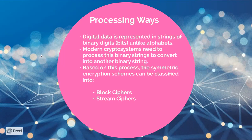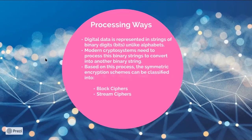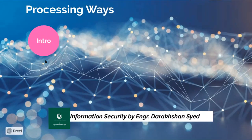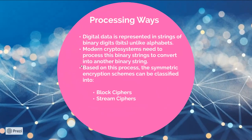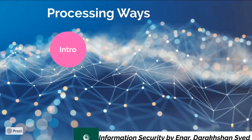The systematic encryption schemes can be classified into two types. Number one is block ciphers. Number two is stream ciphers. So let's directly start with the first one, which is stream cipher.